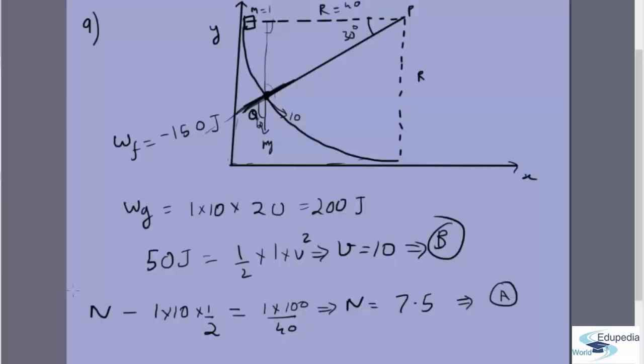Which means N equals 5/2. 5 plus 5/2 is 7.5. So this is the answer to the tenth question. The ninth question was B, tenth question 7.5 newtons. This is one of the easier questions in this paper, a standard mechanics problem, nothing too complicated about it. Thank you.